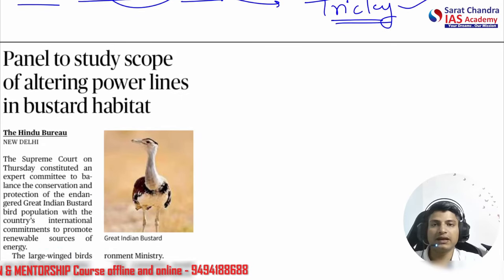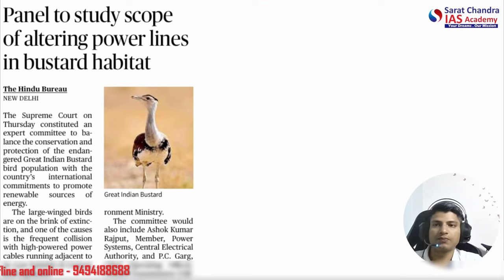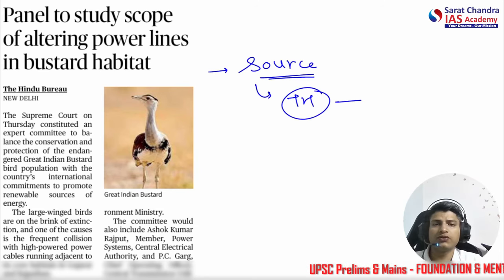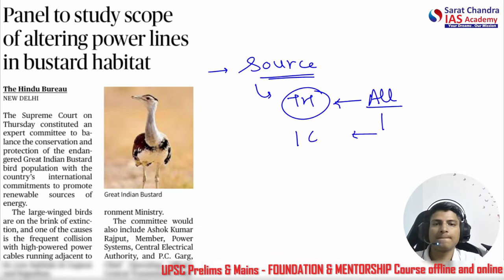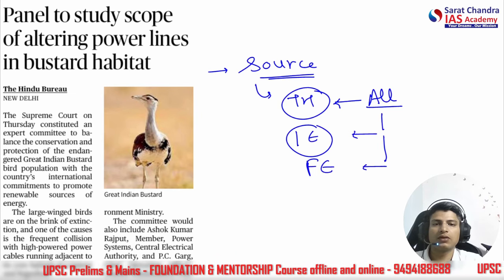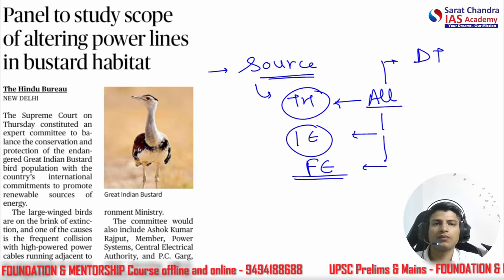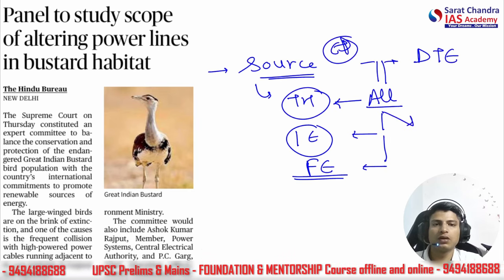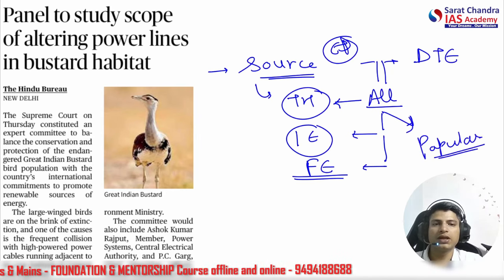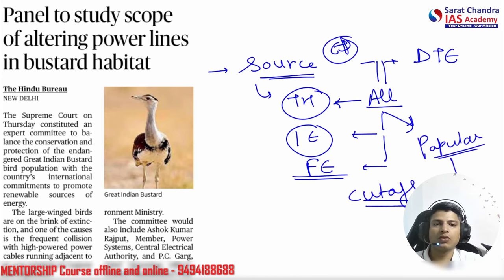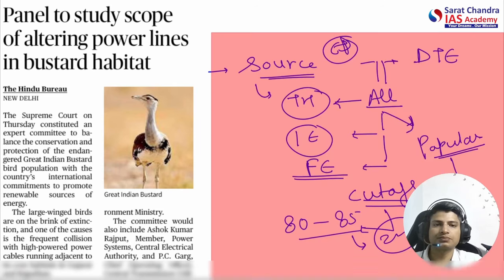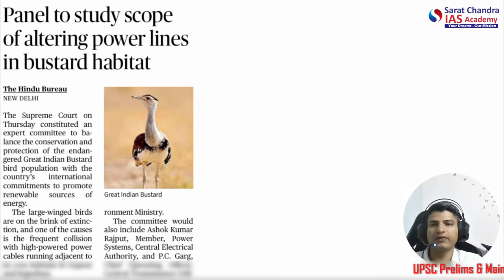Conservation programs are being run for the GIB at a large scale. The source is again The Hindu newspaper. Not all questions will come from The Hindu — some will come from the Indian Express, Financial Express, Down to Earth, EPW, or other sources. The key point: if you know what is popular in the news, you can clear the prelims cutoff, which is only about 80 to 85 marks out of 200. If you follow even one single source carefully, you will have enough knowledge.